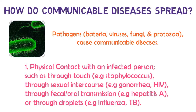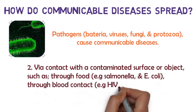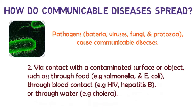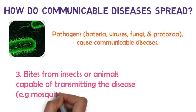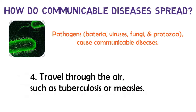Other transmission routes include fecal-oral transmission, for example, hepatitis A, or through droplets, for example, influenza and TB. A second route is via contact with a contaminated surface or objects, such as through food — for example, salmonella and E. coli — through blood contact, for example, HIV and hepatitis B, or through water, for example, cholera. A third route is bites from insects or animals capable of transmitting the disease, for example, mosquitoes which cause malaria and yellow fever.